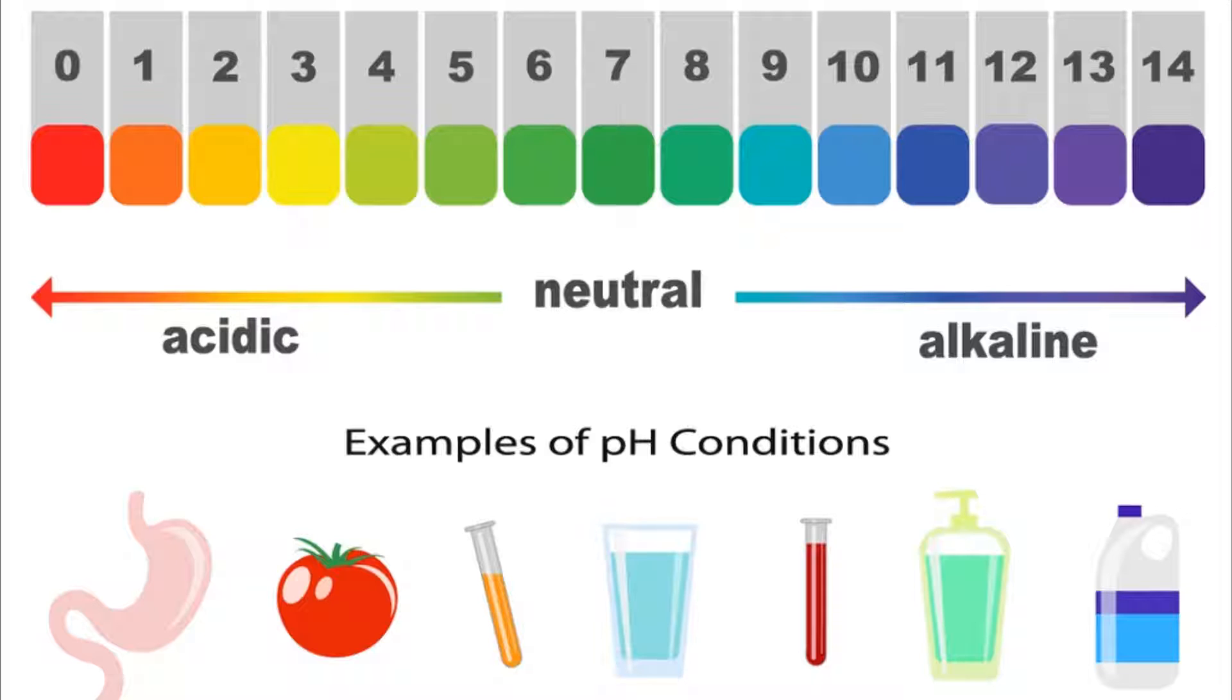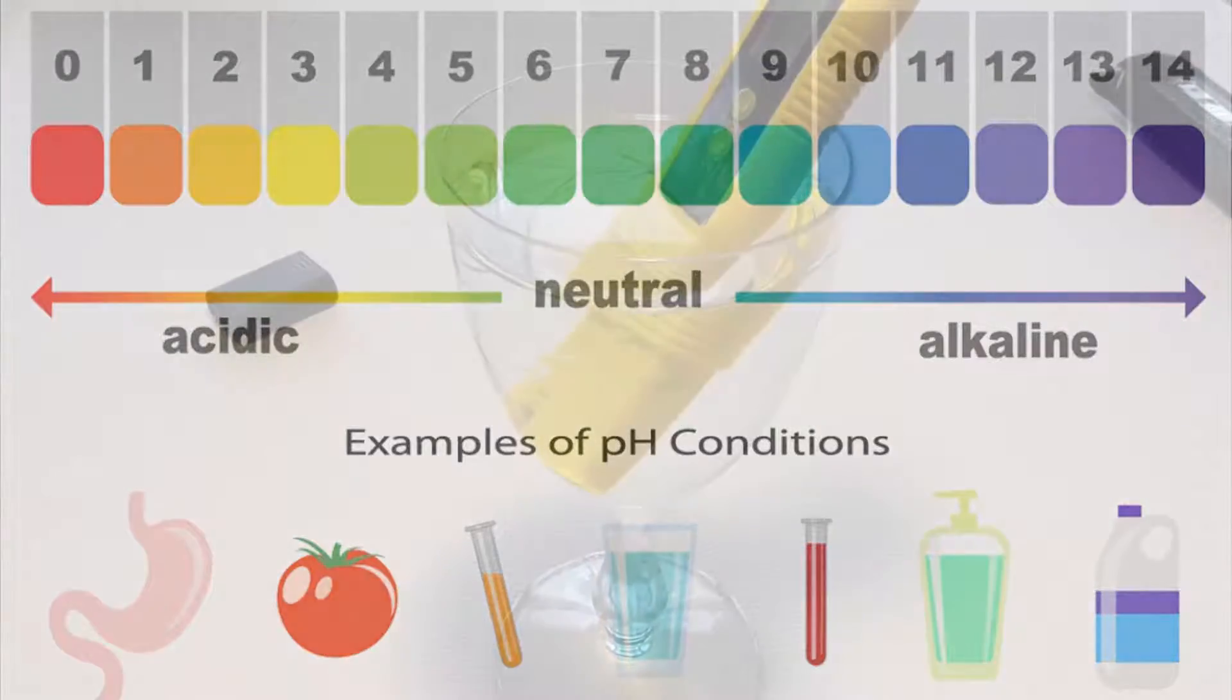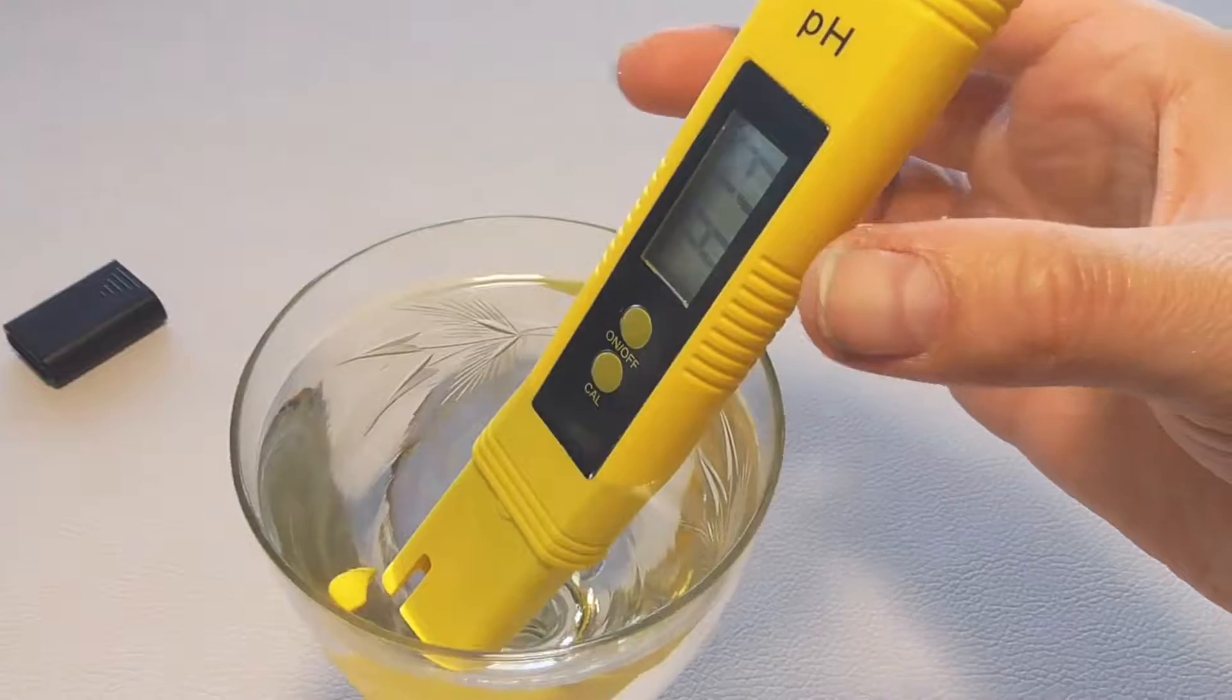The ideal pH level for drinking water should be between 6 to 8.5 and you can test it with this pH meter tester.